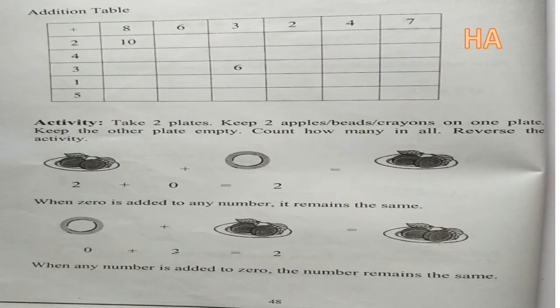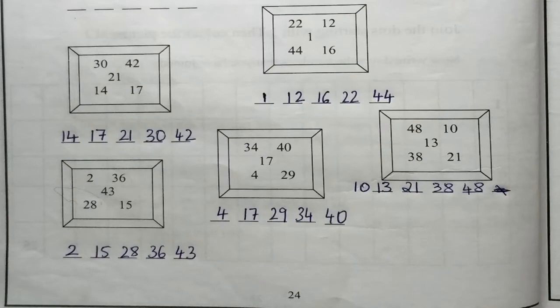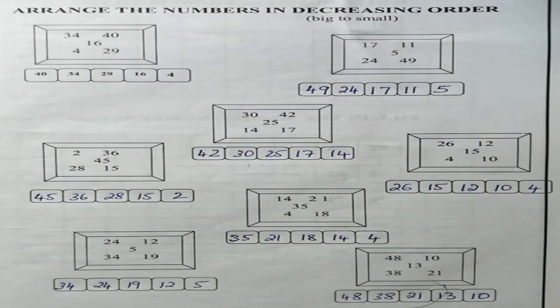Children, on page number 48 in your Bal Ganit, you have an addition table and a small activity. I want you to try it on your own and we will check for the answers in our next class. I hope you all have completed your homework on page number 24, arranging numbers from small to big. Also check page number 25, where you had to arrange numbers in decreasing order, from big to small.